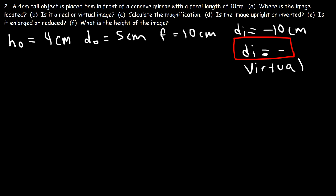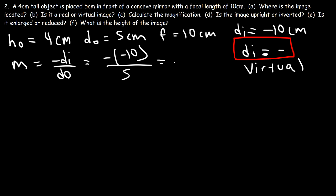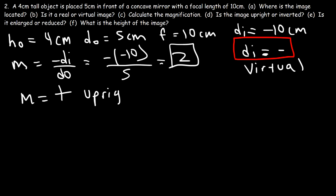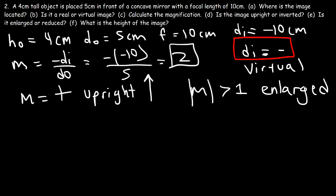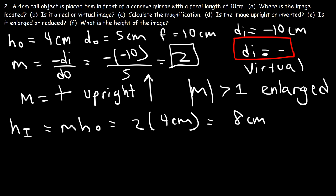Now let's calculate the magnification. Magnification equals negative dI divided by dO, which is negative (negative 10) divided by 5 — that's positive 10 divided by 5, giving 2. Because the magnification is positive, we have an upright image. Since the absolute value is greater than 1, the image is enlarged. So we have an upright, virtual, enlarged image. The image height equals magnification times object height: 2 times 4 centimeters gives an image height of 8 centimeters.